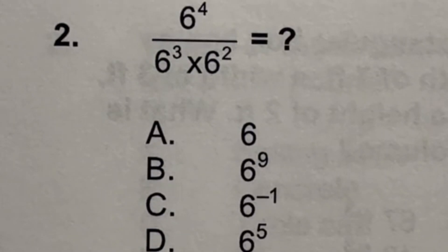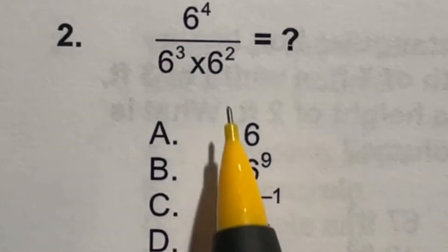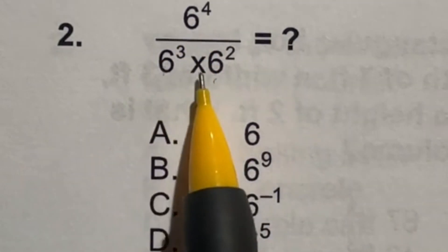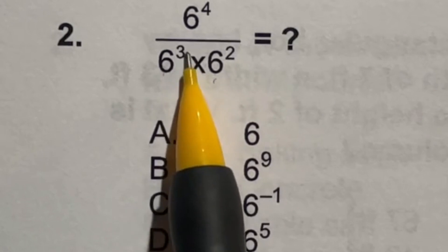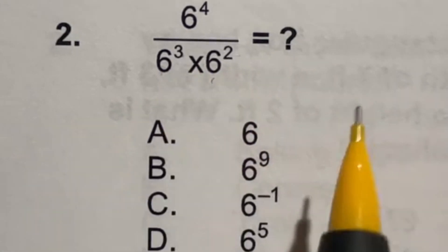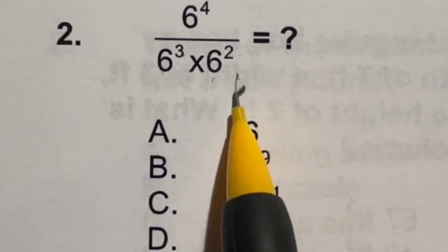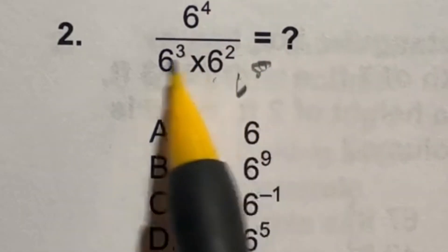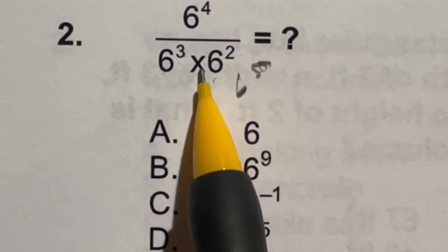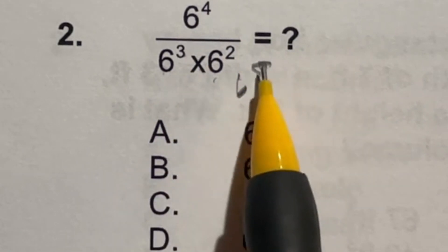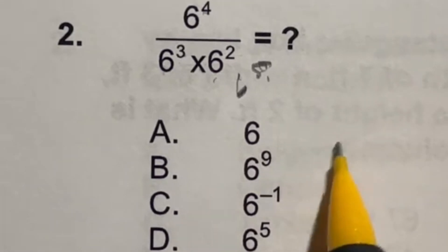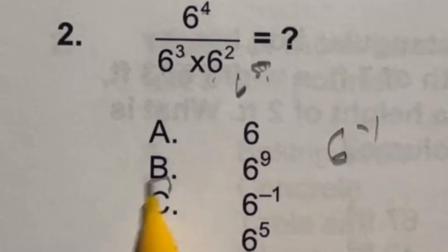So when you have the same base, you can actually do multiple different rules from exponents here. So in this case, all of these have the same base of 6. If you are multiplying something at the same base, you can actually just add the exponents together. So this really will just become 6 to the 5th power on the bottom. Now on top, we have 6 to the 4th. When you're dividing, it's the opposite of multiplying. So the opposite of adding is going to be subtracting. So if I do 4 minus that 5, it's going to give me 6 to the negative 1. So our answer here is C.